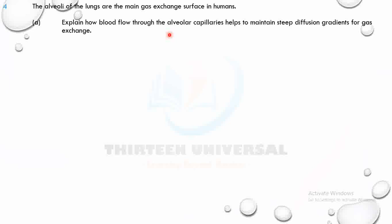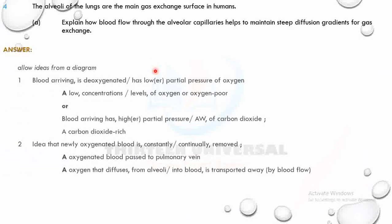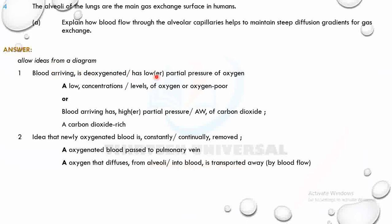Blood arriving is deoxygenated — low partial pressure of oxygen, high partial pressure of carbon dioxide. Once the blood is oxygenated by the movement of oxygen from the alveolus into the blood, the blood moves away through the pulmonary vein, and oxygen is transported away. This continuous removal of oxygenated blood maintains the steep diffusion gradient.